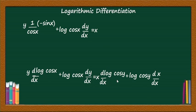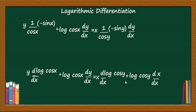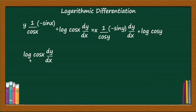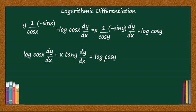What is the derivative of log(cos y)? It is 1/cos(y) into derivative of cos y, which is −sin(y)·dy/dx. The right hand side becomes x·(−sin y/cos y)·dy/dx + log(cos y)·1, that is −x·tan(y)·dy/dx + log(cos y). Bringing x·tan(y)·dy/dx to the left side gives +x·tan(y)·dy/dx.